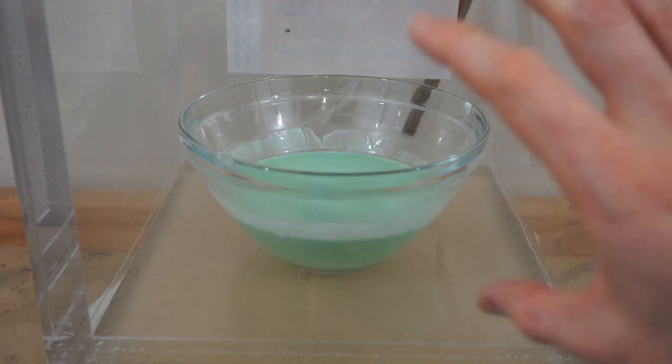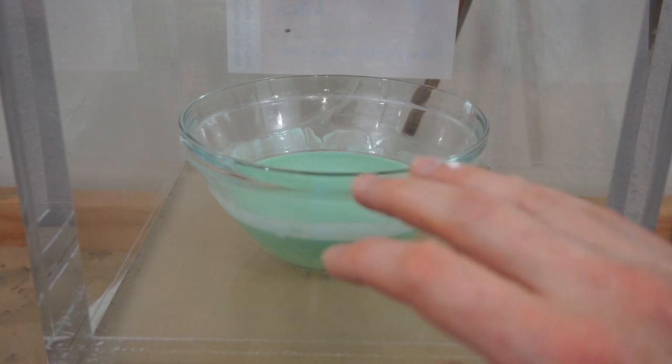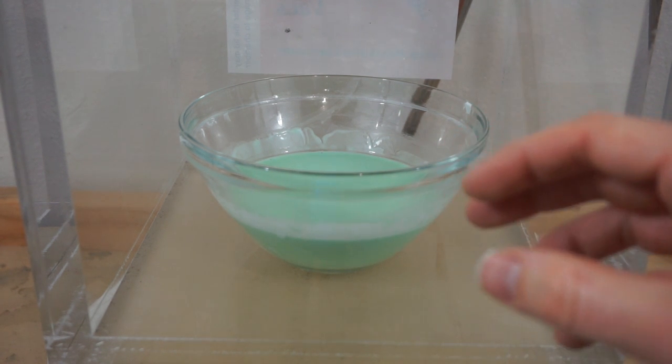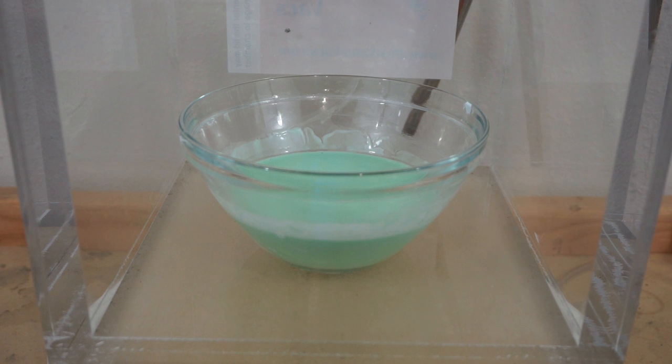But in the vacuum chamber, since we can boil it at room temperature, we can get it to boil without heat and so it's not going to coagulate. So we're going to try to boil the Oobleck.